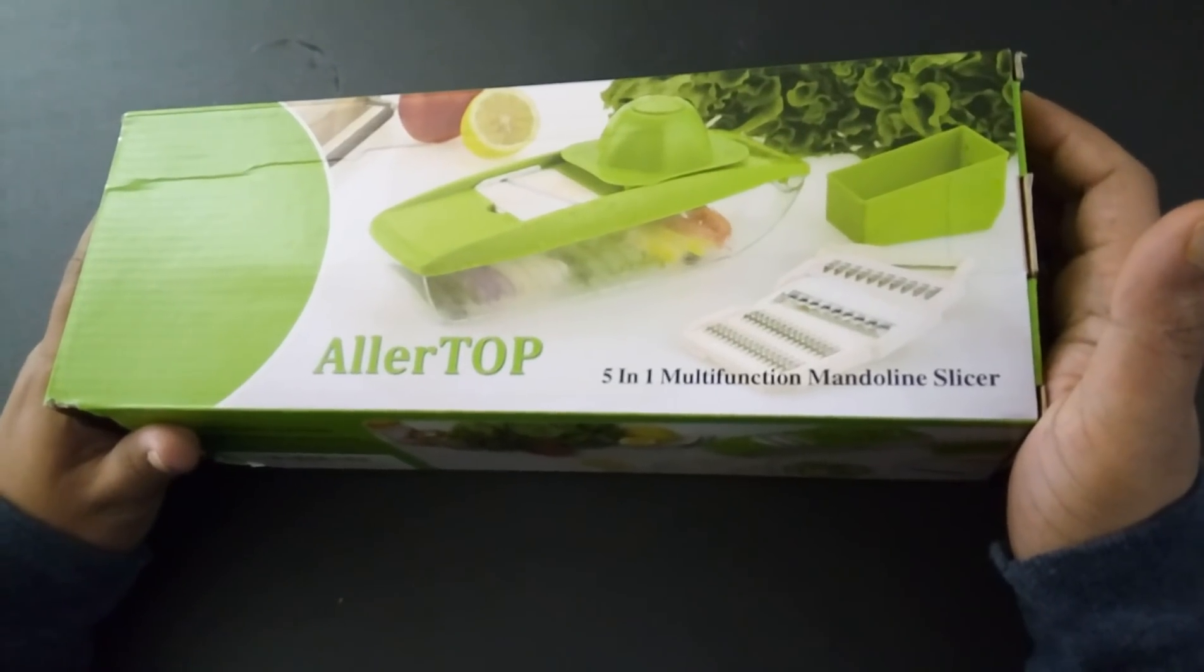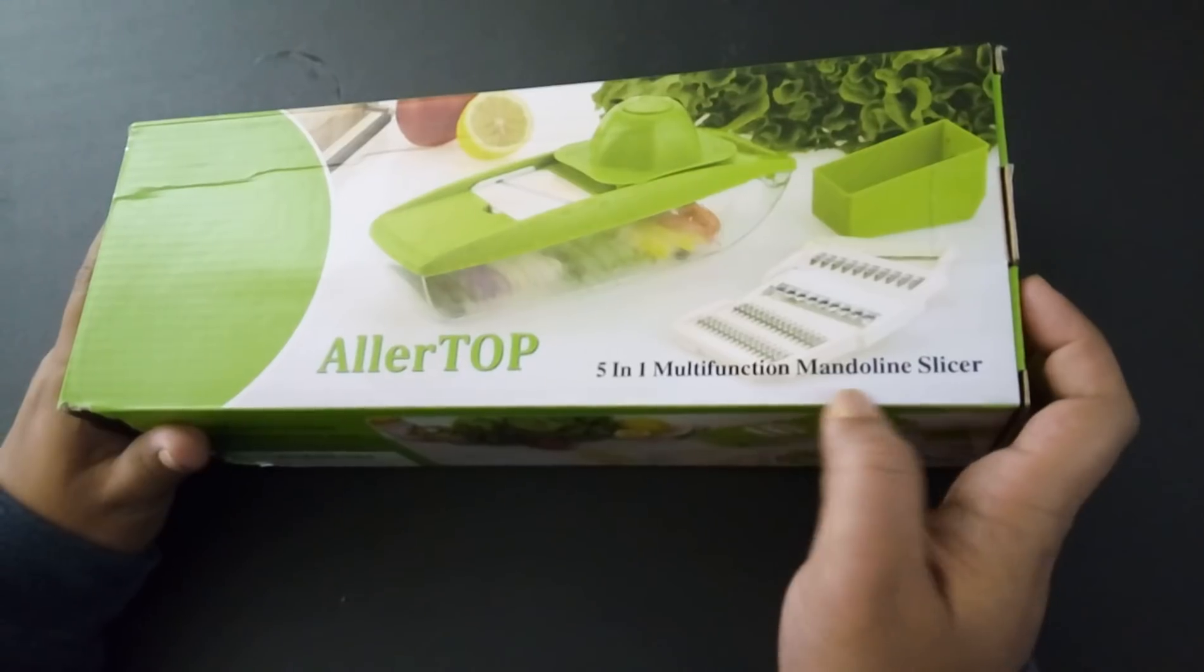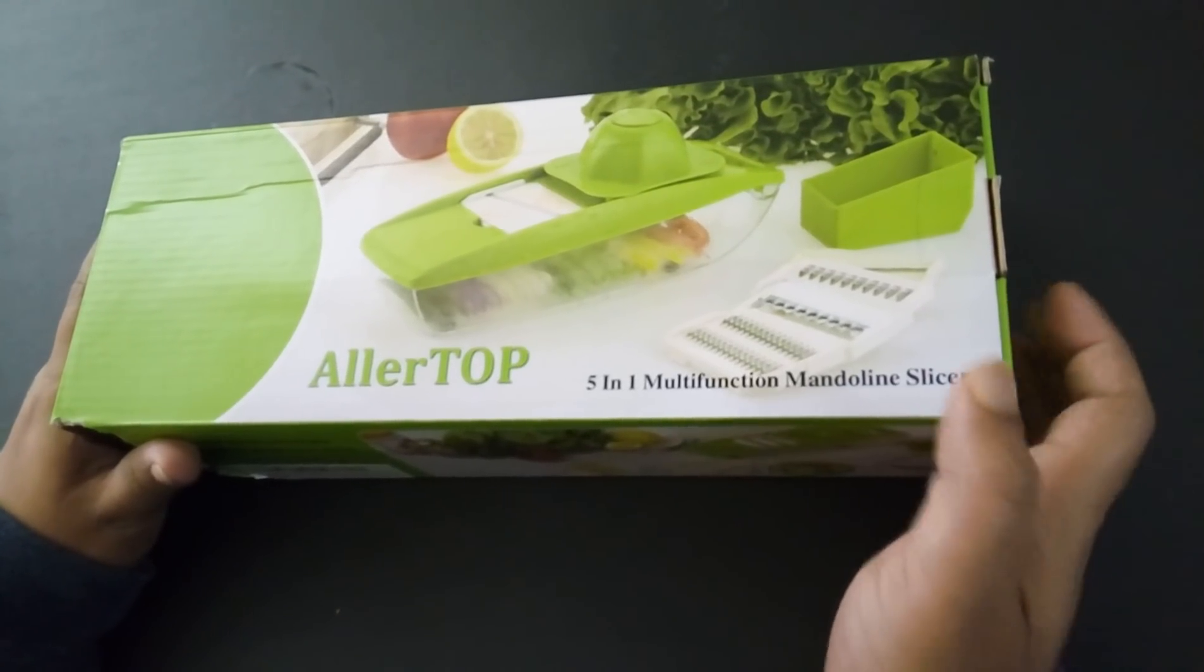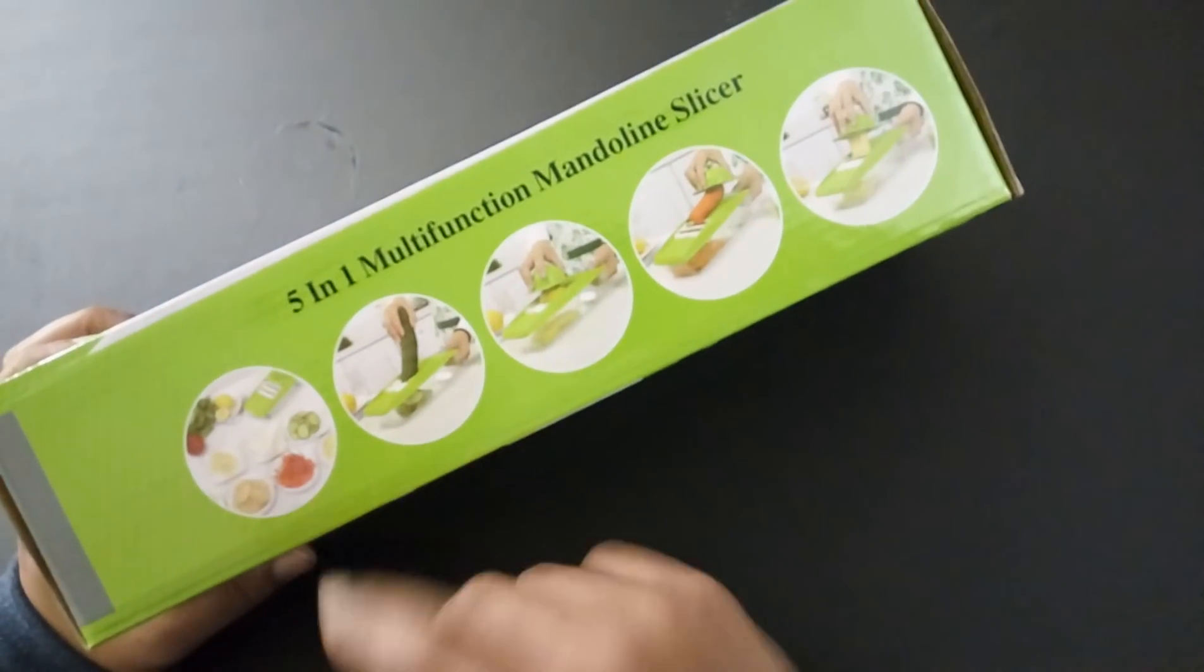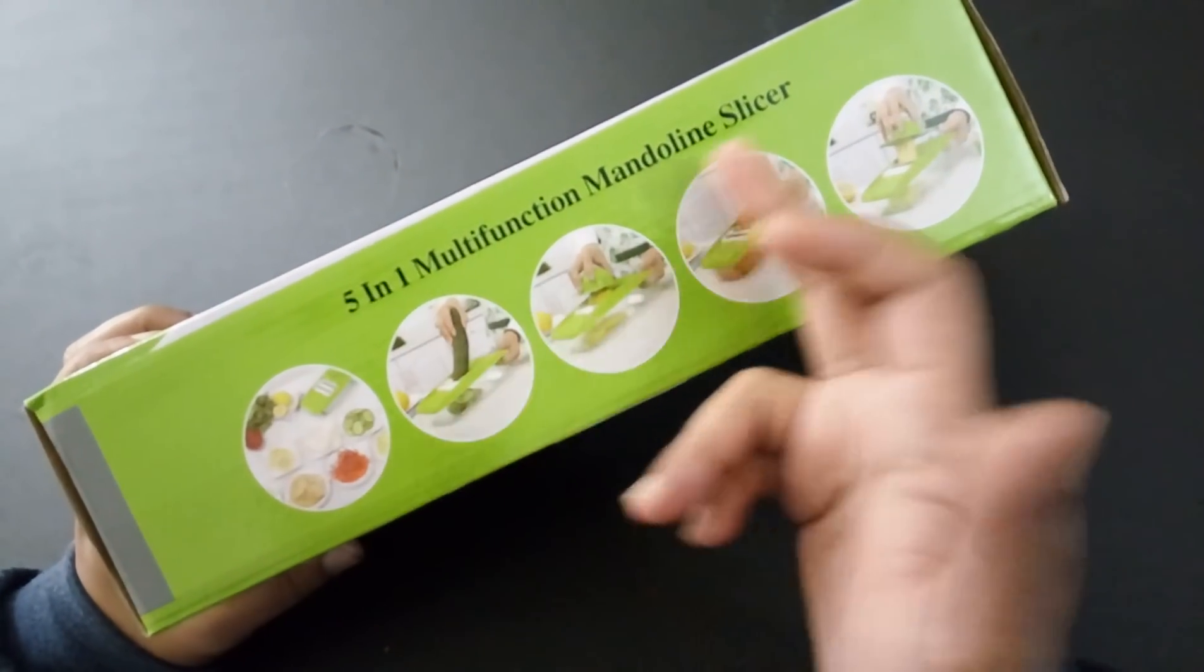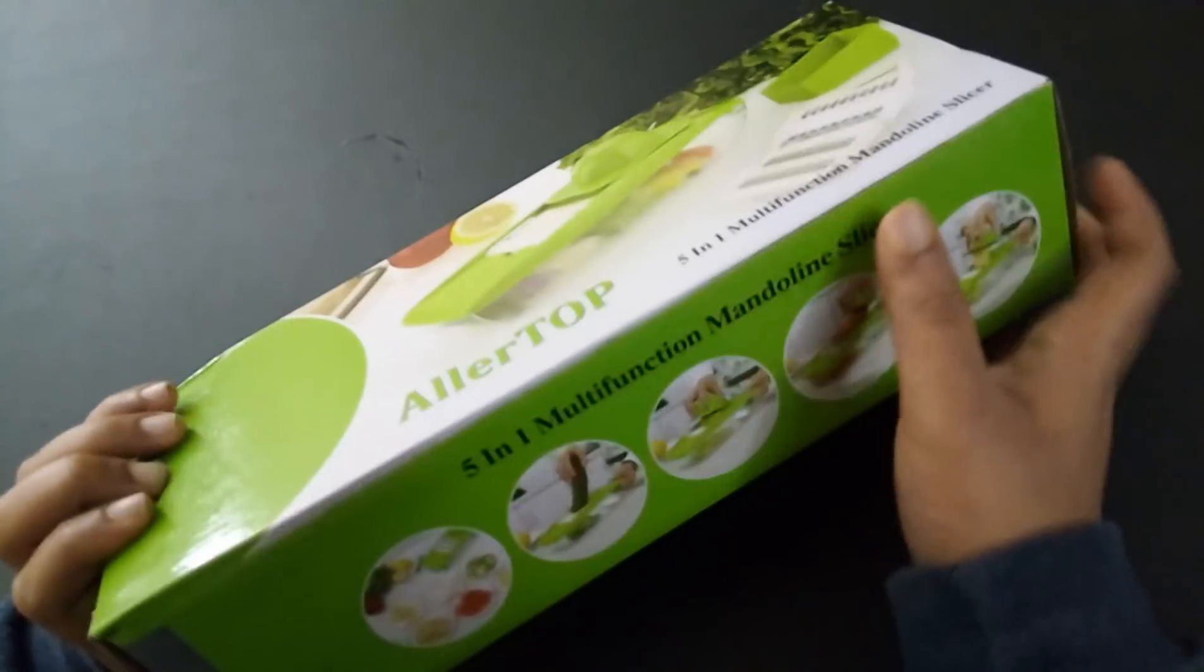Hi everyone, welcome to Cool Products. Today I would be unboxing a 5-in-1 multifunction mandolin slicer. This is one of the cool kitchen devices which you can own and it supports five types of functions. Let me unbox this and show you what all functions it supports.